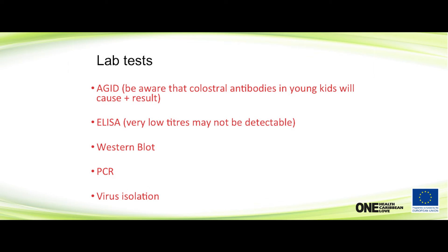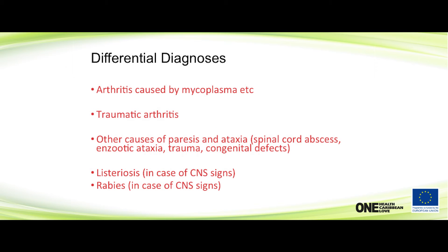Lab tests include the AGID (Agar Gel Immunodiffusion Test), which many labs still use, and ELISA, which may not detect low antibody titers. If you test animals less than six to nine months old, they might not have antibodies yet, or antibodies may just be from colostrum — so you can't say definitively if an animal is infected. Western blot, PCR, and virus isolation are what you really want. Differential diagnoses include arthritis, anything causing nervous symptoms, listeriosis, and rabies if present in your country.